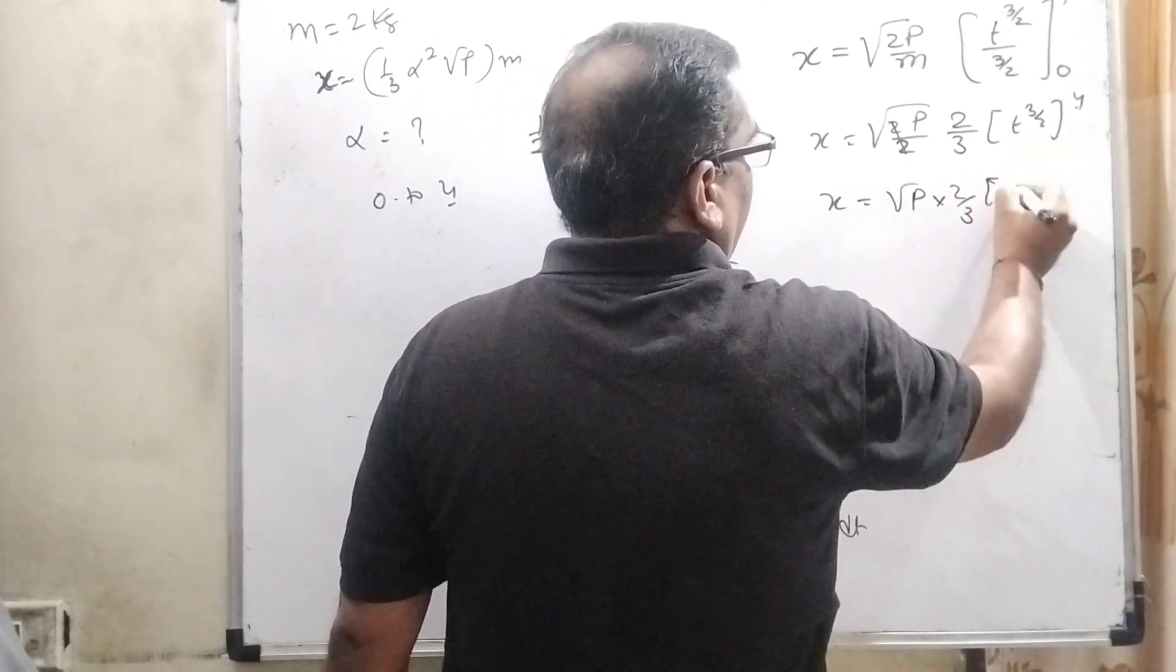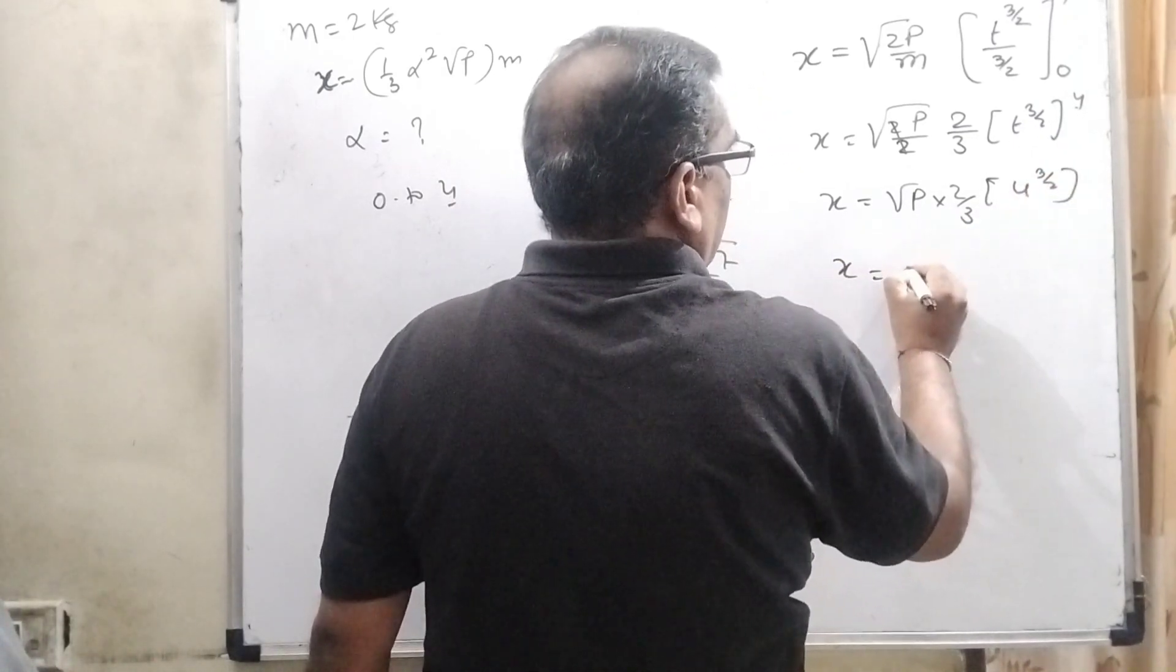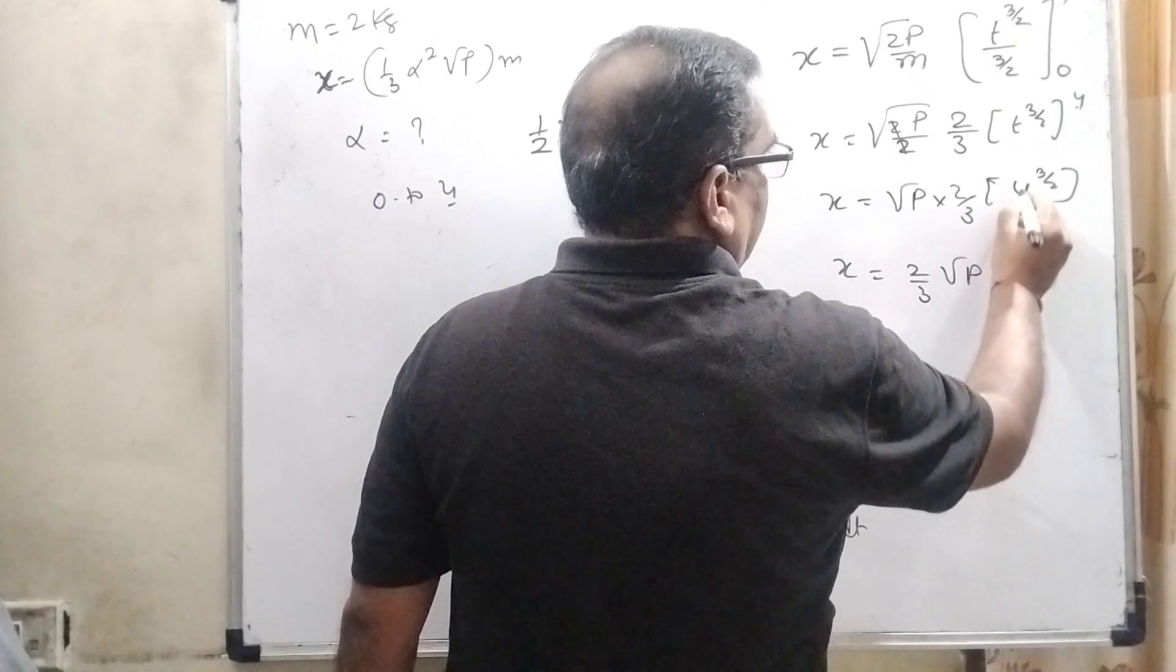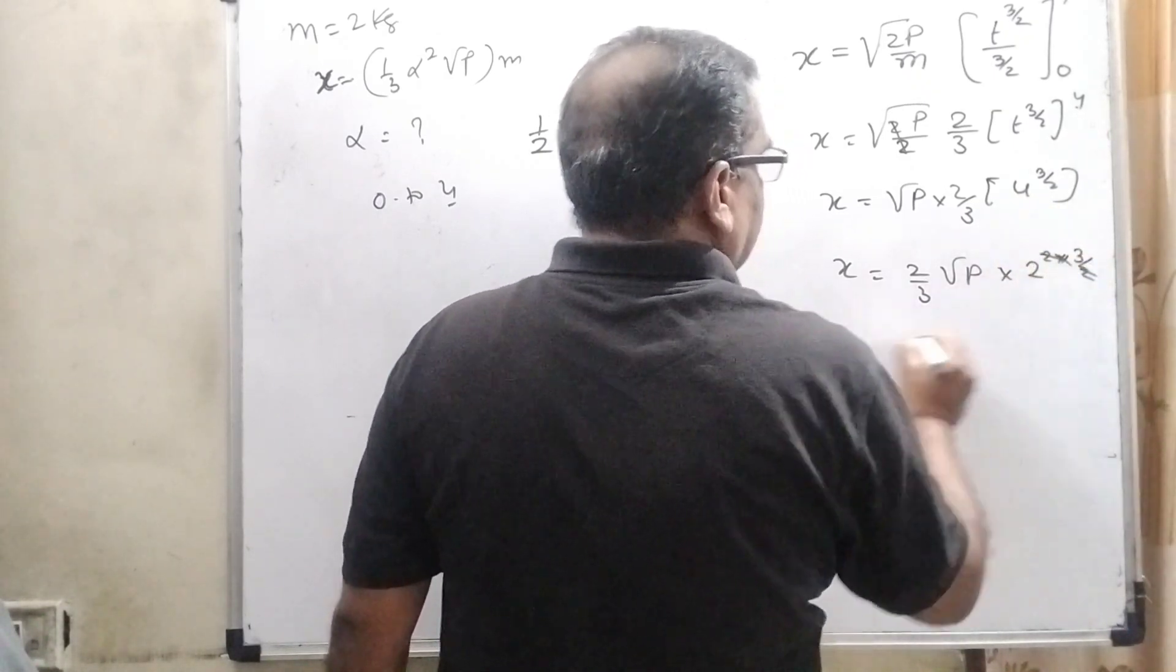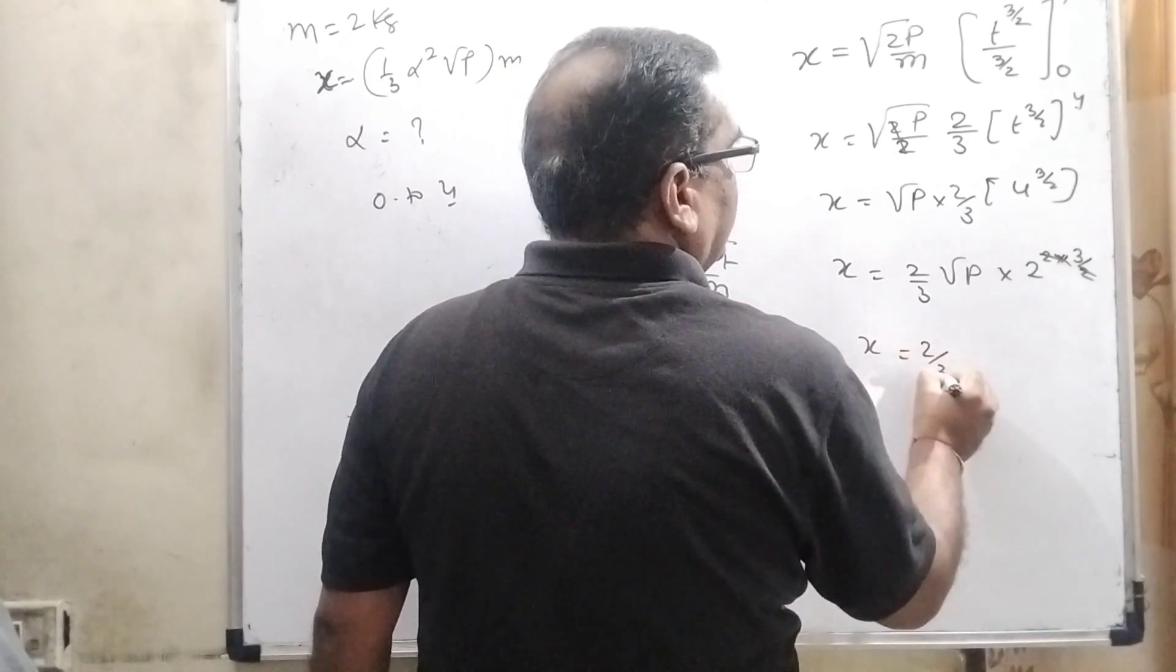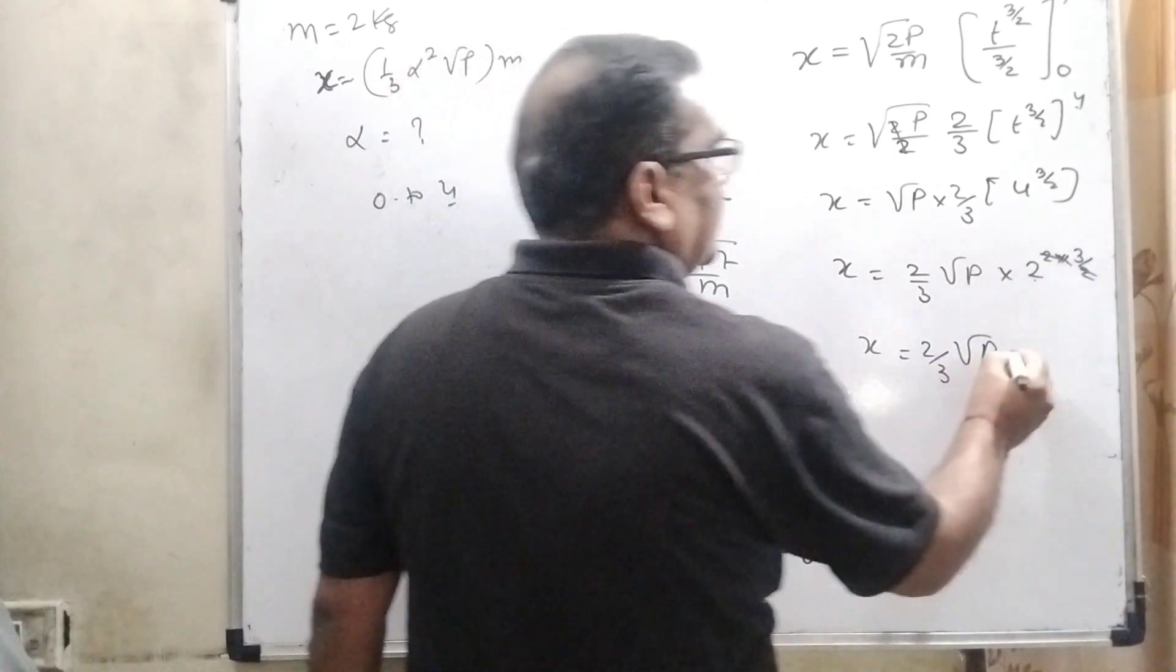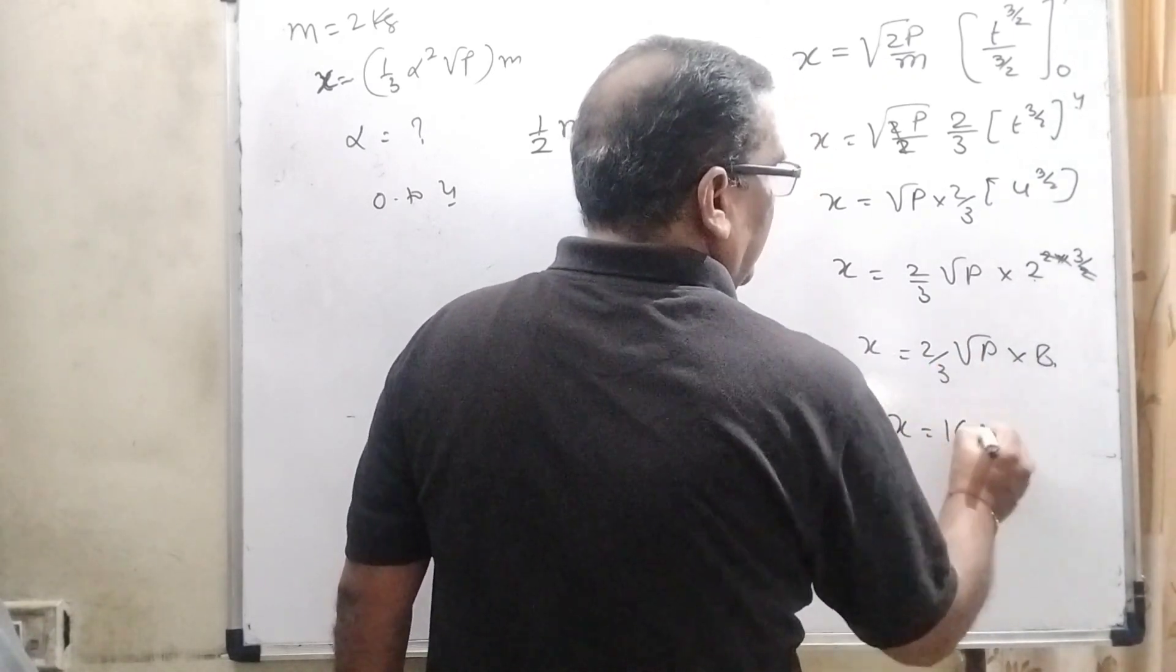Substitute this value of the limit: 4 raised to power 3/2 equals (2/3)√P, and 4 can be written as 2². So 3/2 times 2 cancels out. x equals (2/3)√P times 2³, which means 8. So (16/3)√P.